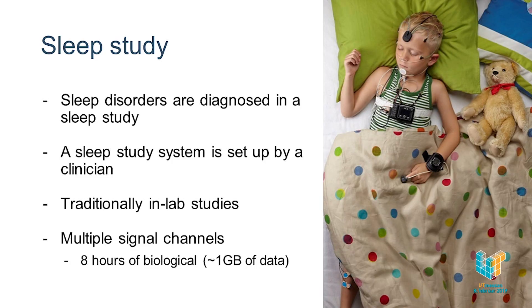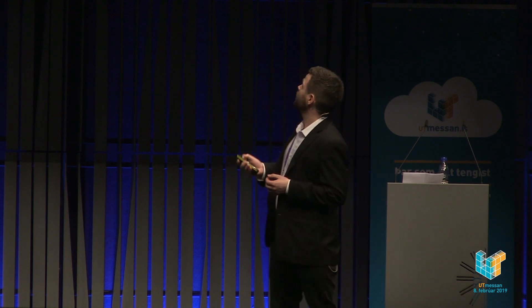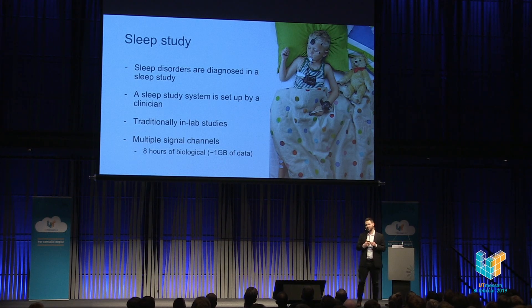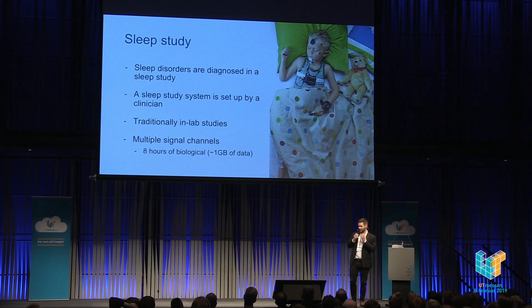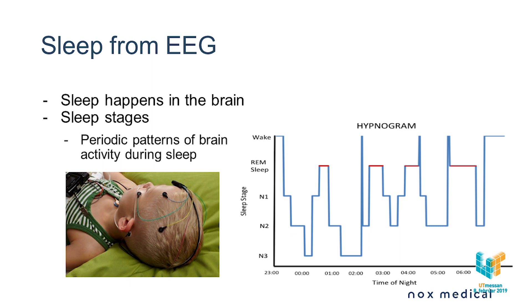How are these disorders detected? They're detected in a sleep study. A sleep study is typically performed in a laboratory where a patient is hooked up to a variety of sensors and measures biological signals during the night. The patient wears an oximeter that measures oxygen saturation and pulse, belts around the chest that measure respiration, an electrode on the chin that measures lower face muscle tone, and electrodes on the head that measure the EEG — the brain wave activity while sleeping.